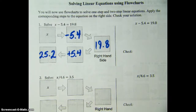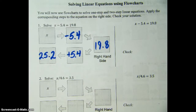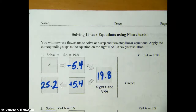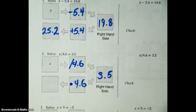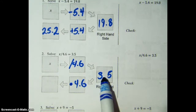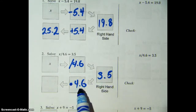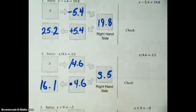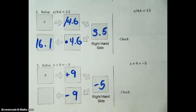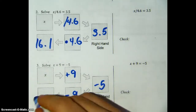Go ahead and try numbers 2 and 3. Pause the video here and unpause when you're done. Hopefully you've given a try to numbers 2 and 3, and let's look at the solutions. Number 2 should look like this, and to get your answer you have 3.5 times 4.6 and you get 16.1. For the next one we have negative 5 minus 9 and you should get negative 14.